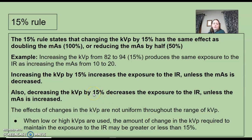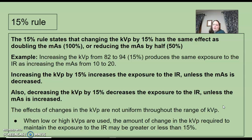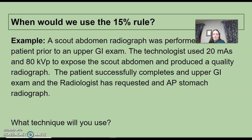And in reverse, decreasing the KVP by 15% will decrease the exposure unless the mAs is changed. The effects of changing the KVP are not the same across all ranges of KVP. When KVP is low or higher, the amount of KVP required to maintain may be greater or less than 15%. It's not an exact rule, so don't make it so black and white.